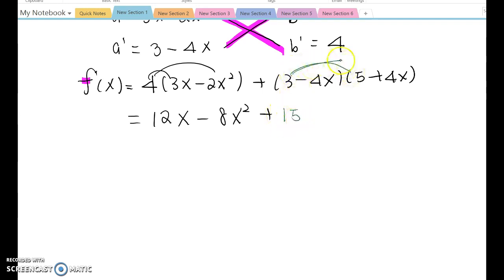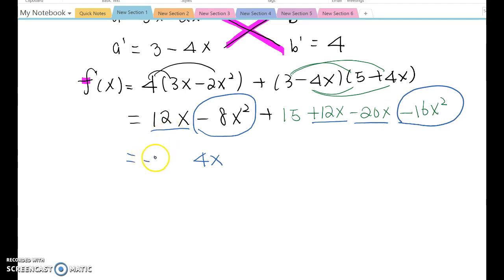15 plus 12x minus 12x minus 16x squared. Combine like terms. This is going to be 12x, 12x is 24x, minus 8x gives us 16x, so it becomes 4x. Minus 8x squared and minus 16x squared is negative 24x squared. Therefore, f prime x equals negative 24x squared plus 4x plus 15. That will be the answer.